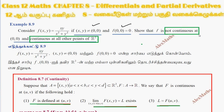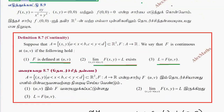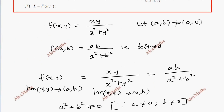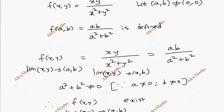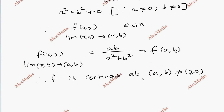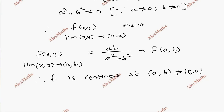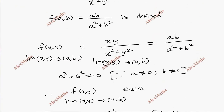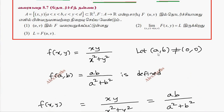Now, f is not continuous at (0,0). Since (a,b) is not equal to (0,0), f is continuous at (a,b) — that is, at any point other than (0,0). Now for the second part, let a,b equal (0,0) and check continuity at the origin.